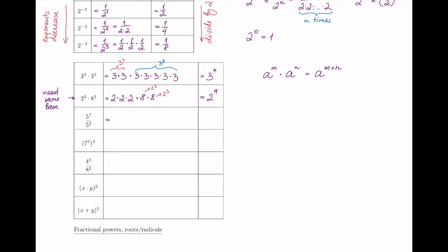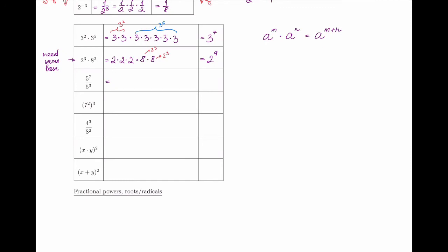What happens with division? 5 to power 7 divided by 5 to power 3 — on the top I have five seven times, and on the bottom five three times. Because everything is a multiplication, these are all common factors, so I can cancel out the entire bottom with the top. On top I have four 5s left, so my result is 5 to power 4. The general rule: if I divide the same base with different exponents, the exponents simply get subtracted.